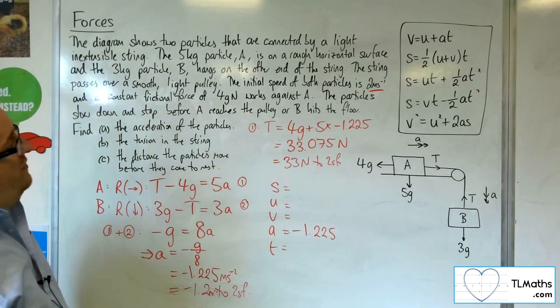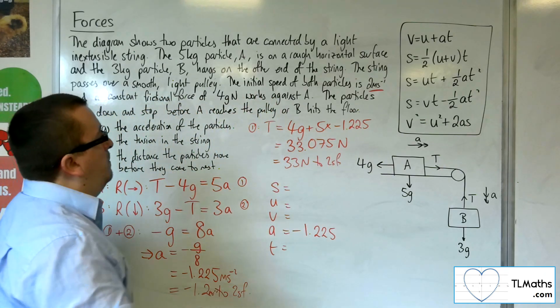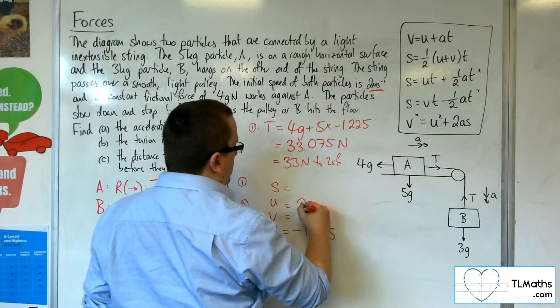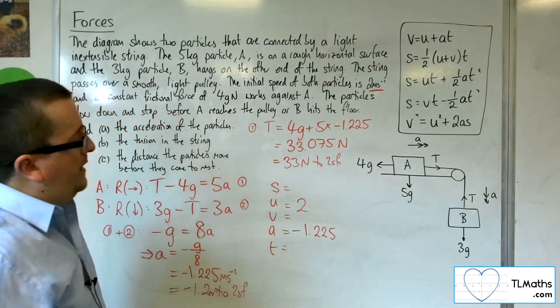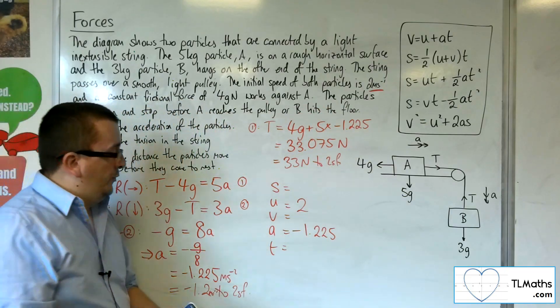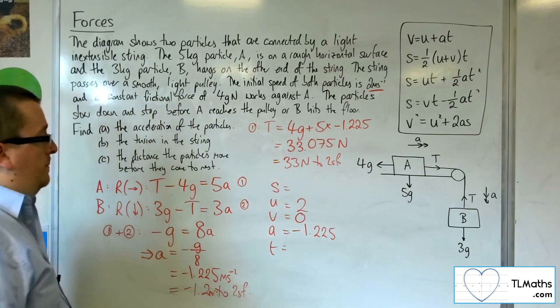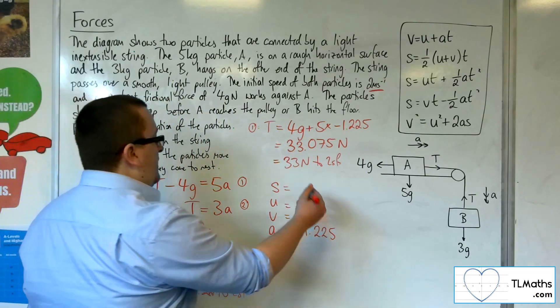Now I also was told that, a bit of information up there, the initial speed of both the particles is 2 metres per second. So that's 2. Now the final velocity, I want them to come to a halt. So that means the final velocity is 0. And I want to find the distance that they cover.